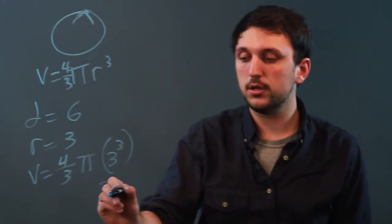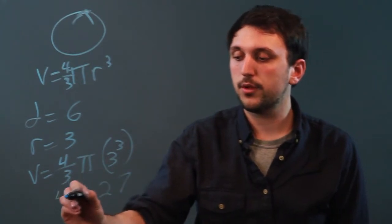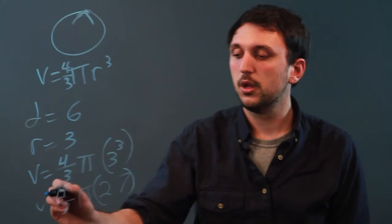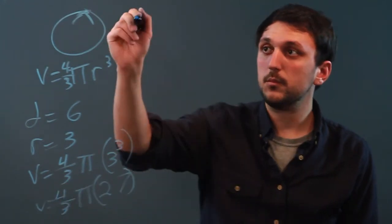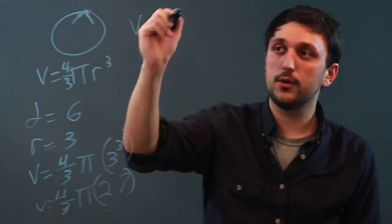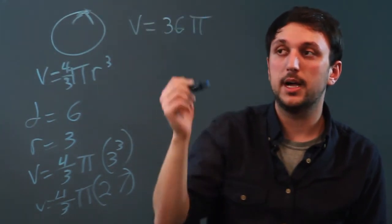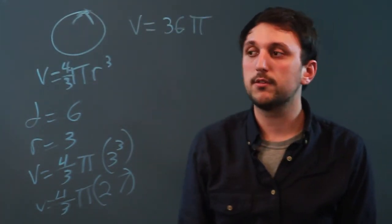Now 3 cubed is 27 and four-thirds pi times 27 would be, well four-thirds times 27 is going to be 36 times pi. So our volume is 36 pi.